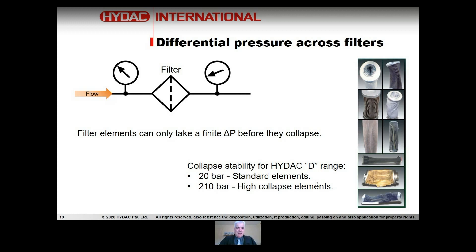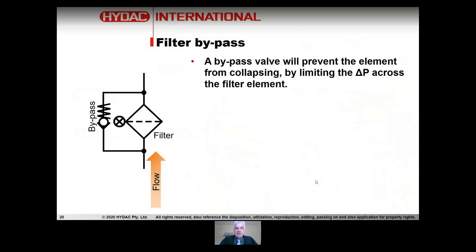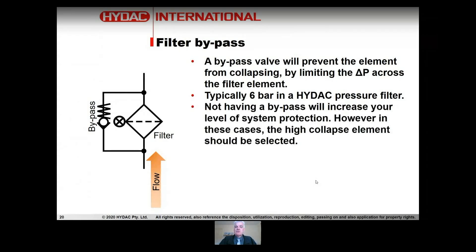To prevent element collapse, we often fit a filter bypass. The filter bypass allows fluid to bypass through the housing around the filter without going through the filter media. This is primarily used during high-viscosity cold starts or if someone forgets to change the filter element. A bypass prevents the element from collapsing by limiting the delta P across it. Typically in a standard HIDAC pressure filtration product, that's six bar — although other bypass pressures are available on request. Not having a bypass increases system protection, but then the high-collapse element should be selected.